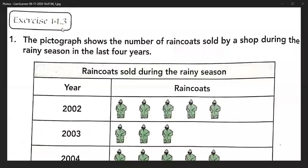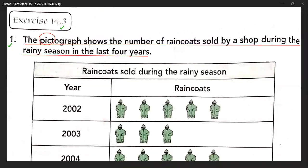Exercise 14.3, question number one. The pictograph shows the number of raincoats sold by Aesop during the rainy season in the last four years. First of all, we should know what is a pictograph. When pictures are used to represent information, it is called a pictograph. Here in this question, the picture of raincoats are used to represent information.